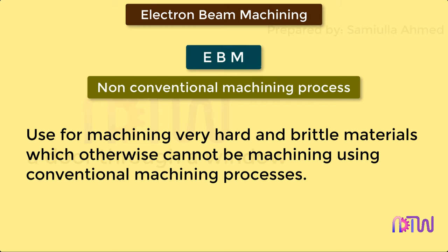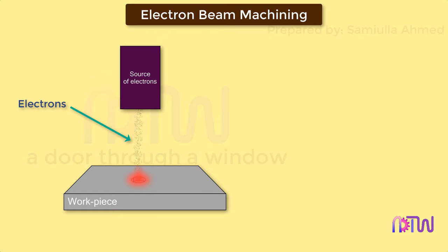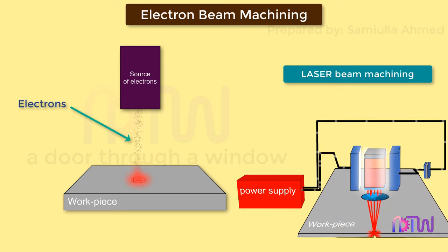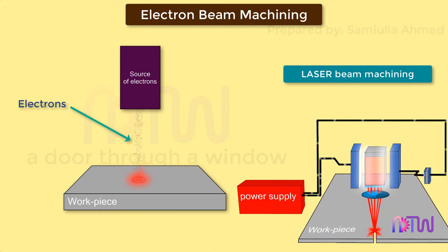In Electron Beam Machining process, the kinetic energy of the electron is converted into heat energy by impinging the fast-moving electron on the workpiece surface. This heat energy evaporates the workpiece surface, similar to the laser beam machining process, where a laser is used in place of electron beam.